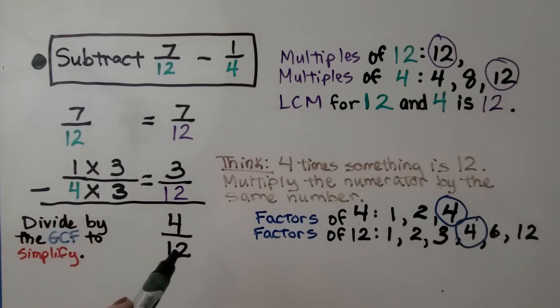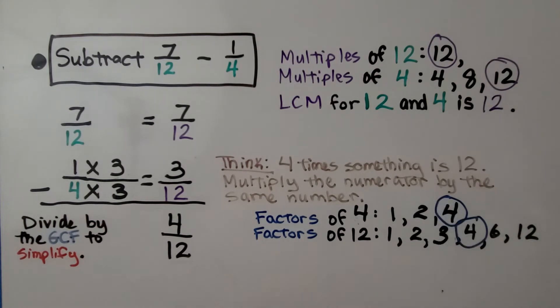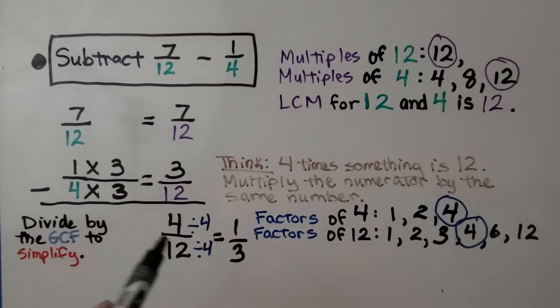We can simplify this by using the GCF. The factors of 4 are 1 times 4 and 2 times 2. The factors of 12 are 1 times 12, 2 times 6, 3 times 4. We see the greatest factor they have in common is 4. So we can divide the 4 and the 12 by 4, which simplifies it to 1/3.